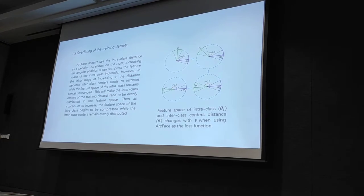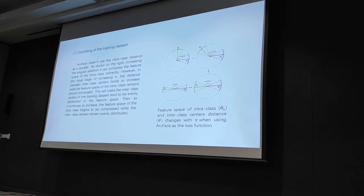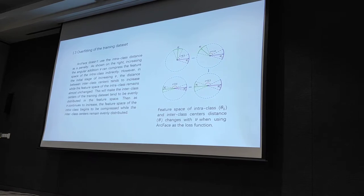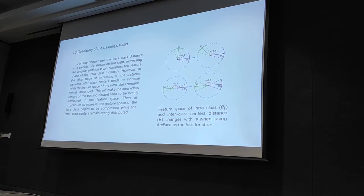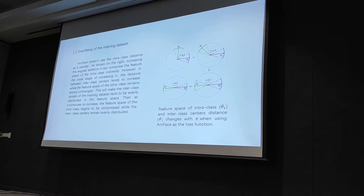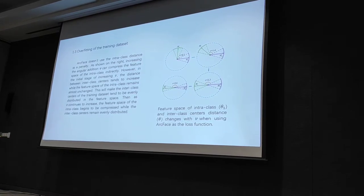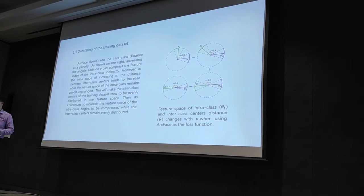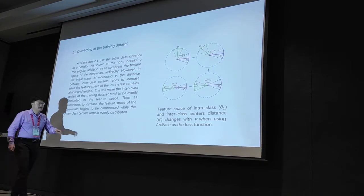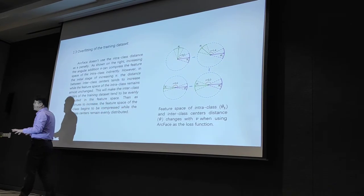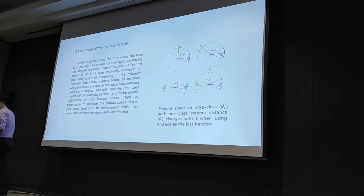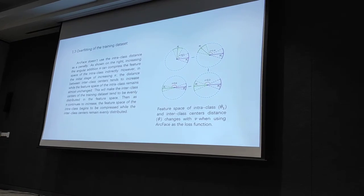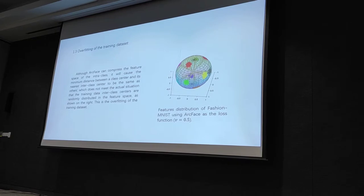This also explains some observation that when you have a limited number of people in your training data, the ArcFace tends to work worse compared with when you have a large number of people. When you have a limited number of people, it's easier for you to get the classes further away from each other, so that the intra-class is not enough penalized. And there's also a figure to demonstrate this idea.